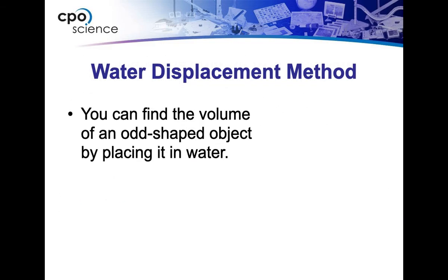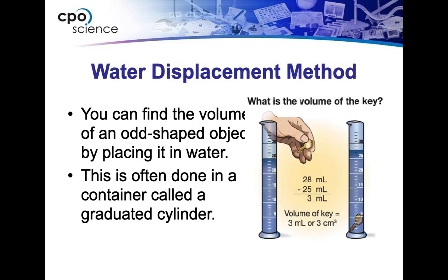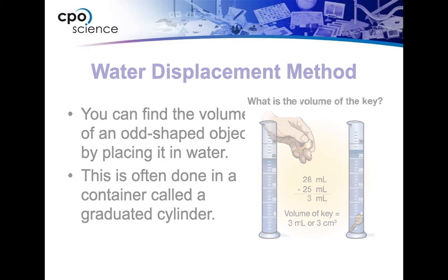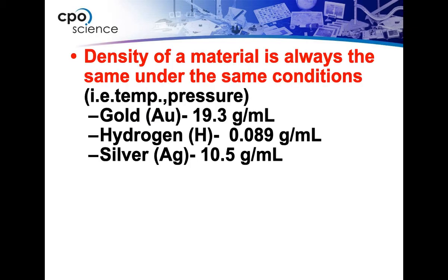For an irregular shaped object, we can use the water displacement method. Let's say we were trying to find the volume of a key. I took the graduated cylinder, filled it up to 25, dropped the key in, and now it reads 28. The difference between those two is 3 milliliters, and that must be the volume of the key. That's why we call it the water displacement method — you are seeing how much water it displaces to calculate its volume. We use that for things that have a weird shape that we can't use a ruler for.